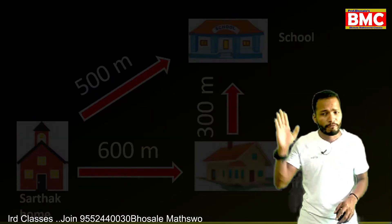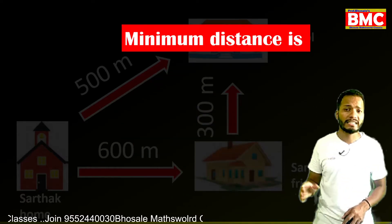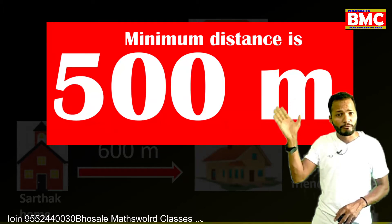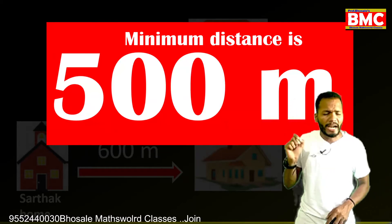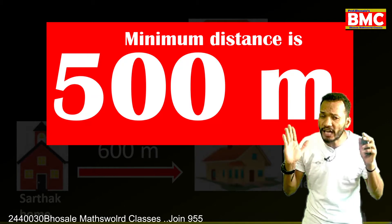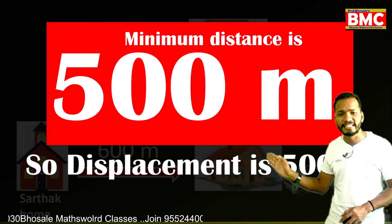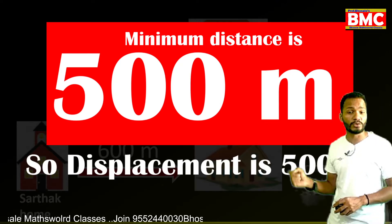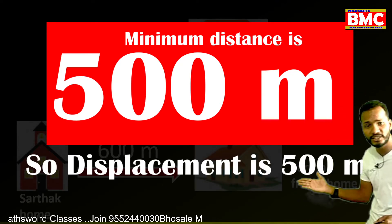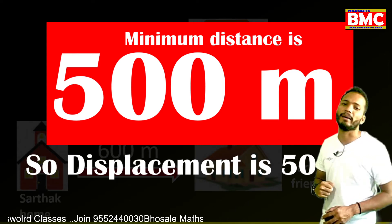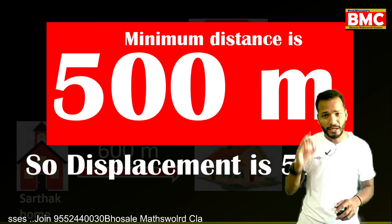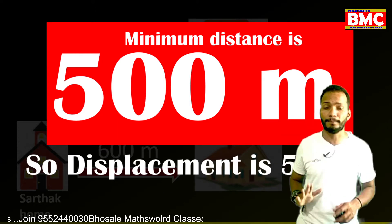So 500 meters is the minimum distance. The minimum distance from Sartak's home to the school is 500 meters. And the minimum distance is what we call displacement. So here, displacement is 500 meters. We have now understood both concepts through an example — distance and displacement.